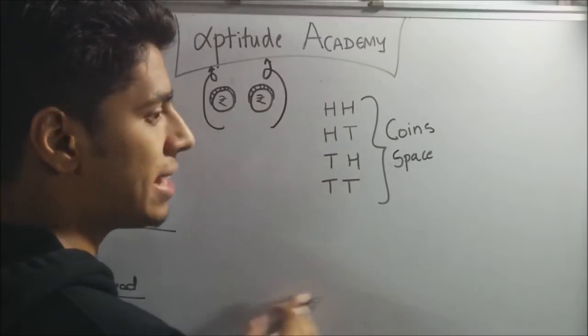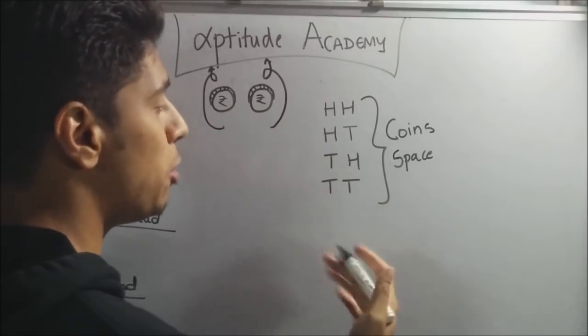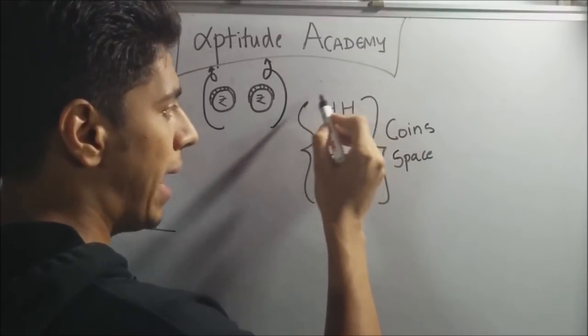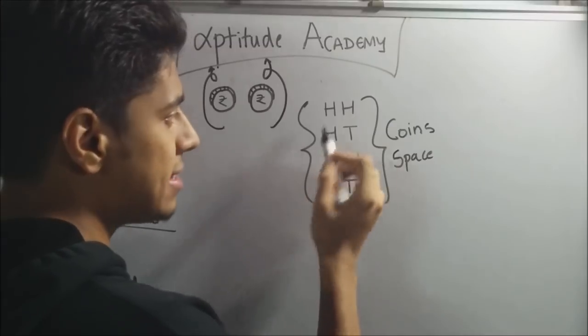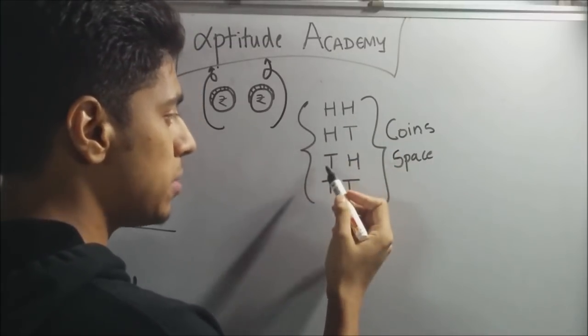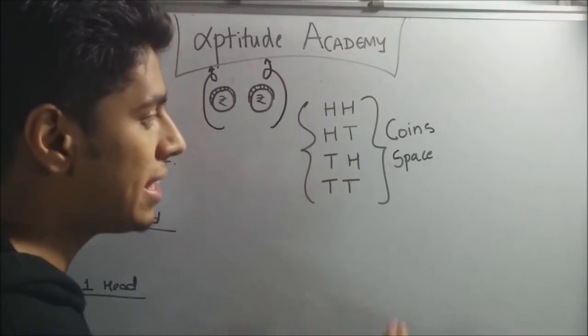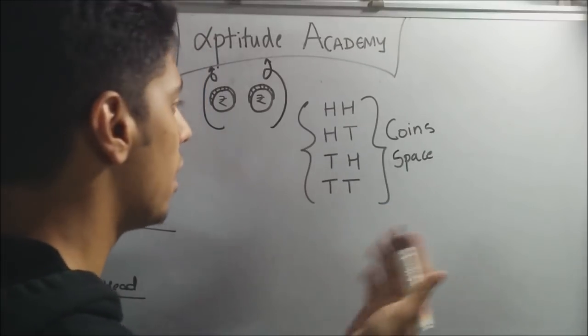Each of the coins has either a heads or a tails. So the number of possible cases that could happen is this. You could either have both of them heads, or the first one could be heads, the second one could be tails, or the first one could be tails and the second one could be heads, or both of them could be tails. So you basically have just four scenarios that could happen.